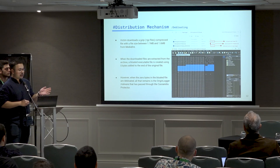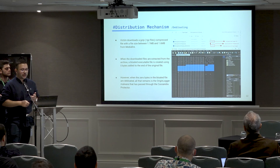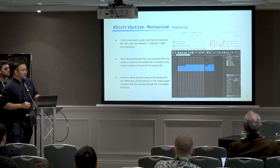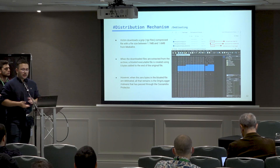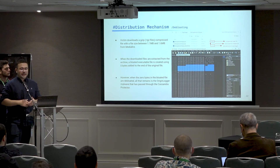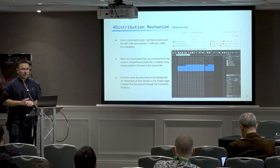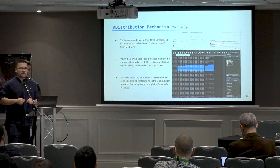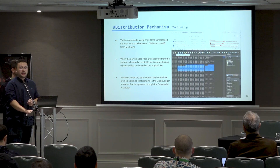When the victim clicks on the archive link in Mediafire, the device downloads a GZIP-compressed file with a file size between 1.1 and 1.6 megabytes. After the downloaded files are extracted from the archive, a bloated executable file is created by appending zero and null bytes at the end of the original file. This gives them the capability to bypass antiviruses and online sandboxes with a higher file size — the original payload is about 1 megabyte but expands to over 700 megabytes. When the zero bytes in the bloated file are de-bloated, what remains is the OriginLogger malware that has passed through Cassandra Protector.